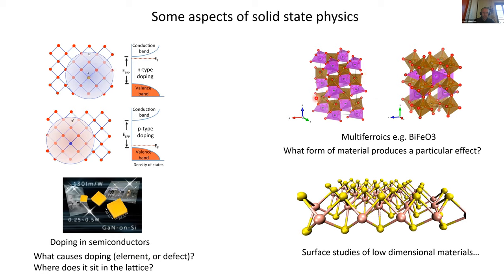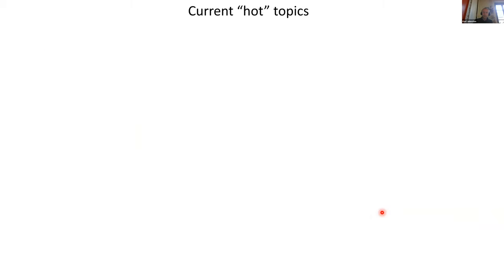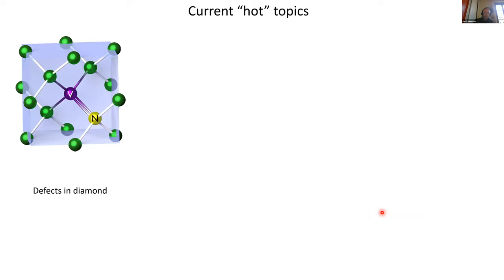There's a lot of effort to understand what form of a material produces a particular effect, including very energy-efficient memory storage. These materials adopt different structures at different temperatures, and understanding exactly what's going on inside them and what phases are present is crucial for producing devices in the future. Inspired by graphene and other low dimensional materials, there's also a campaign to understand surface studies of materials such as graphene and tungsten selenide.